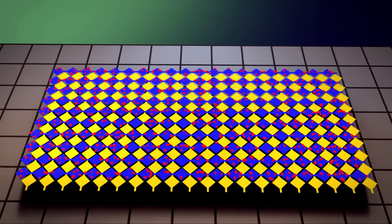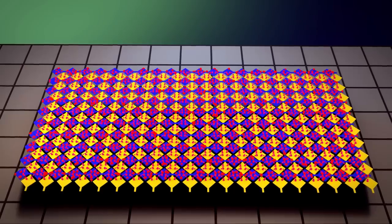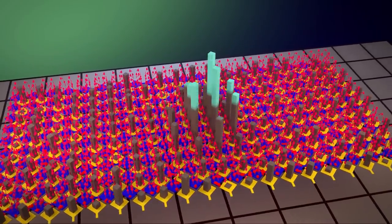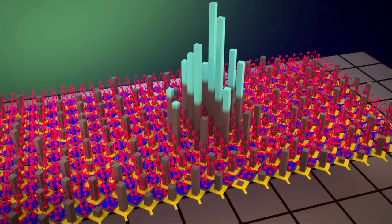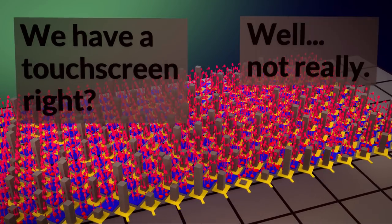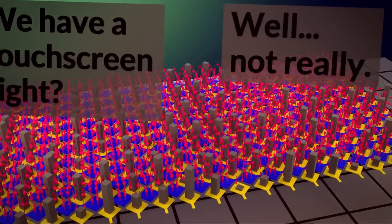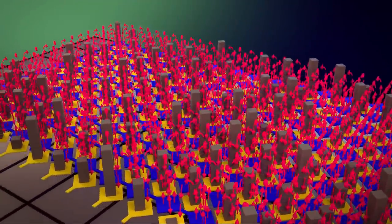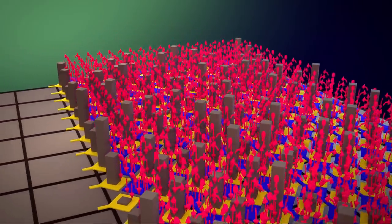Okay, so with all the rows charged negatively, and the electric field built up, and the columns actively measuring to see changes in the electric field, we have a touchscreen, right? Well, not exactly. See, if we continuously measure each of these columns while all of the rows of electric fields are active, we run into a few issues.